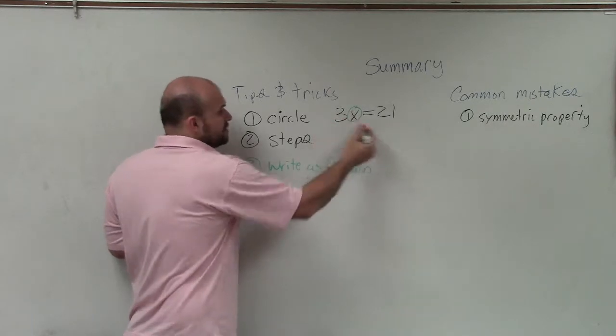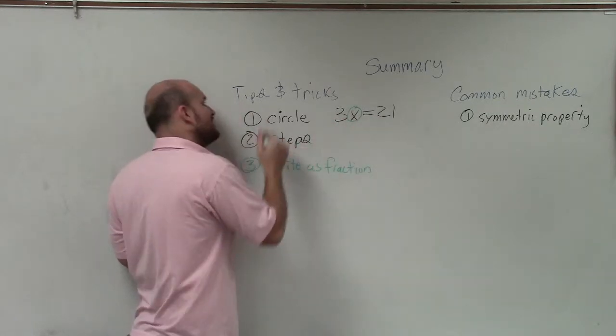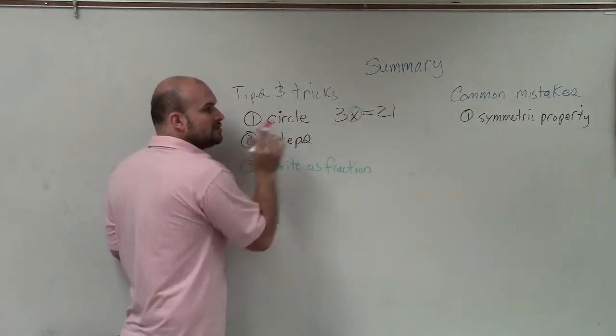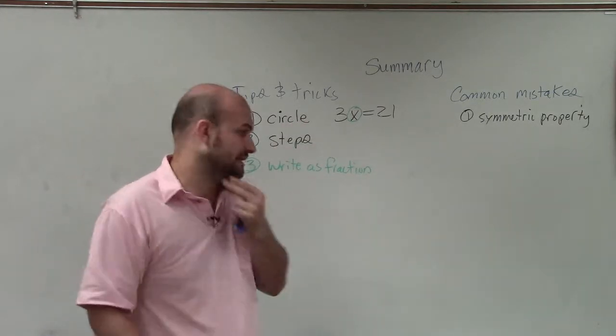So writing down the steps. If you're dividing by 7, you write down dividing by 7, right? Division property of equality. So therefore you know exactly what you're doing and why you're doing it.